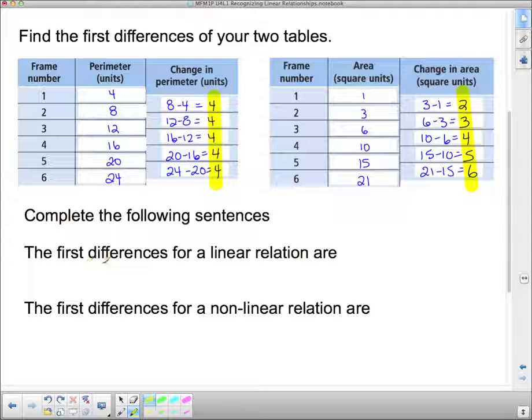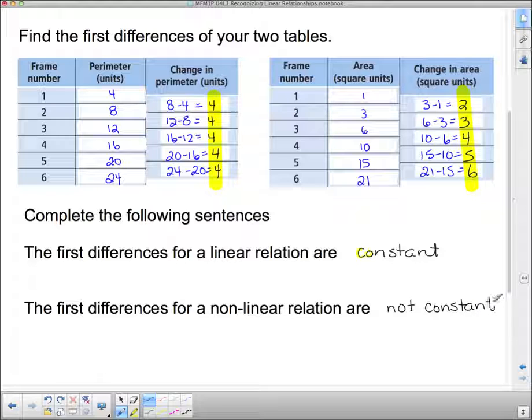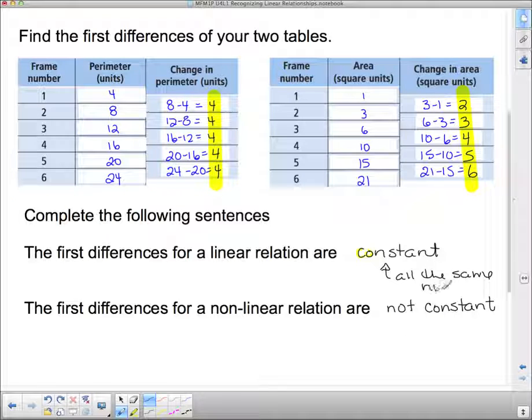So we're going to complete the following sentence. The first differences for a linear relation are constant. Oop, maybe not. Let's pick something that's a better color. Are constant. The first differences for a nonlinear relation are not constant. And by constant, we mean all the same number. All the same number.